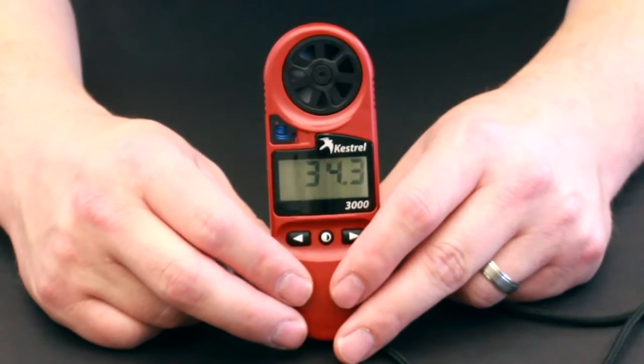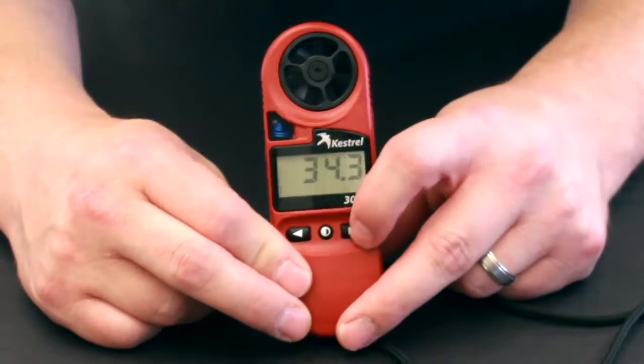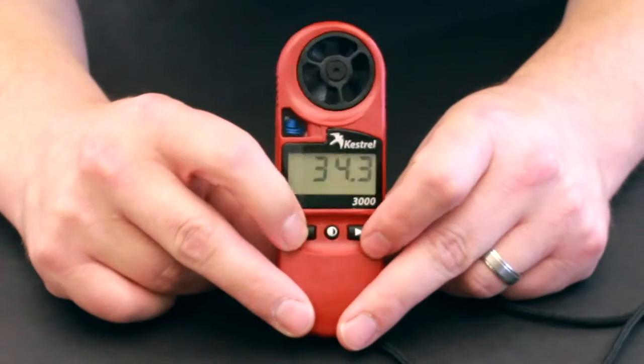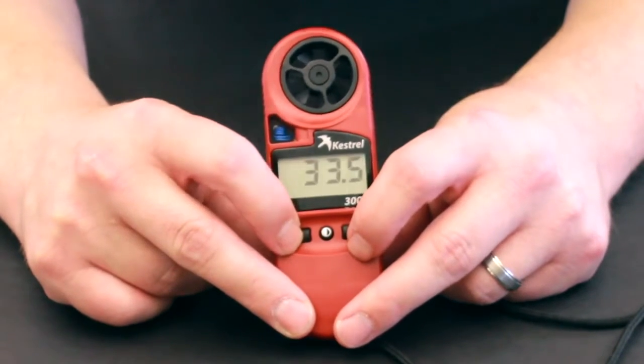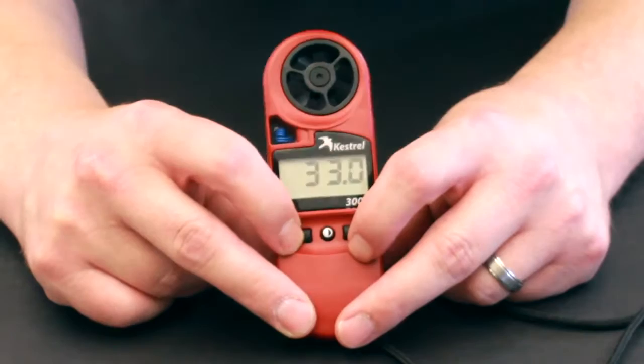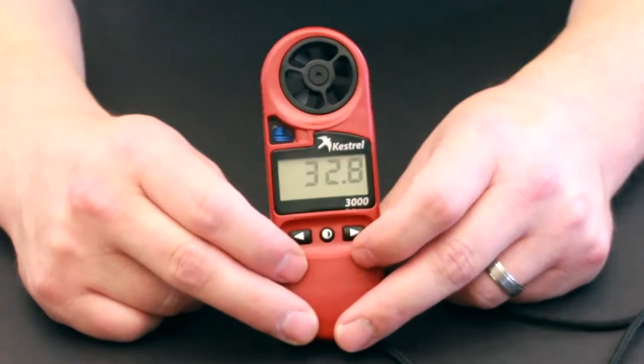Now we have to enter the first value of the first chamber. It should be programmed in. We hit the center button and we see that it displays 34.3. We need to make this 32.8, so we're going to hit the left button until it goes down to the proper humidity for the first chamber.